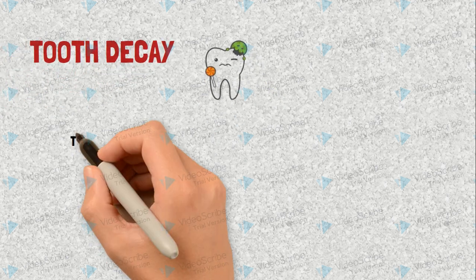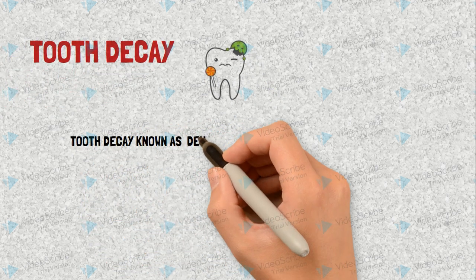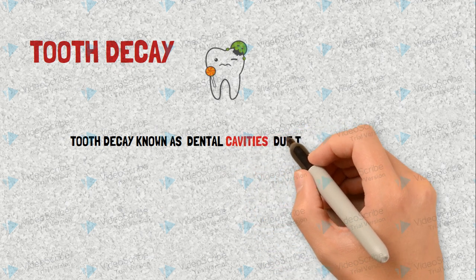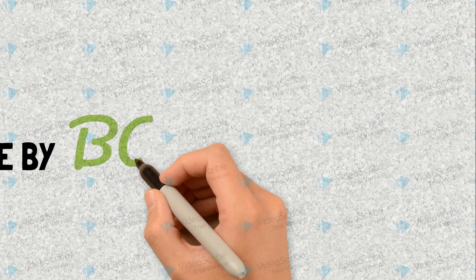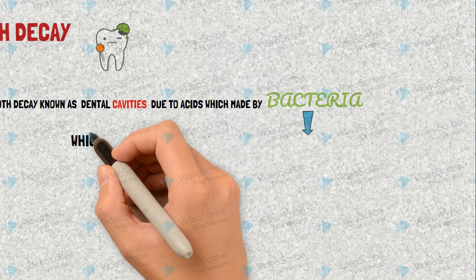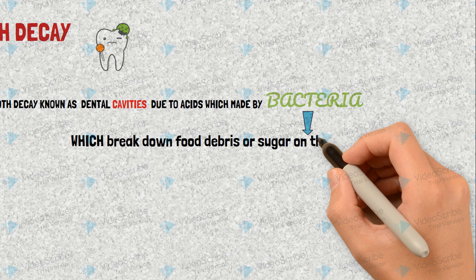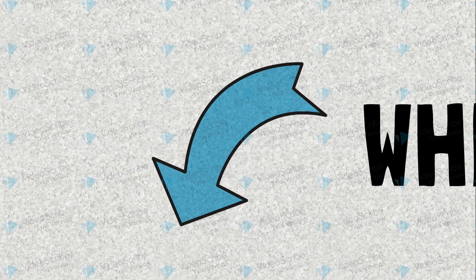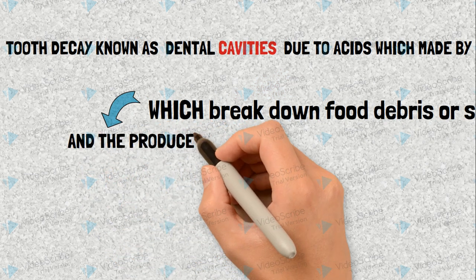Tooth decay, known as dental cavities, is caused by acids made by bacteria which break down food debris or sugar on the tooth surface. The produced acid dissolves the enamel.